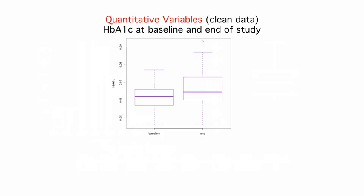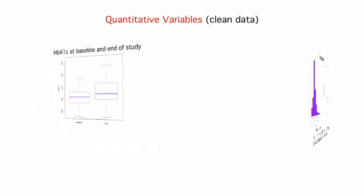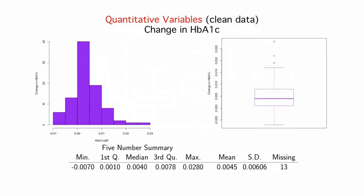For matched data like these, you may recall that we can look at the difference, in this case the change from baseline. Here are the differences in HbA1c, calculated as the value at the end of the study minus the baseline value. The lowest values are negative, but since the first quartile is positive, we know that more than three quarters of the subjects had higher HbA1c at the end than at the beginning of the study, with a few very large positive changes.